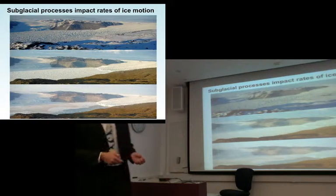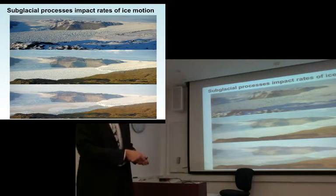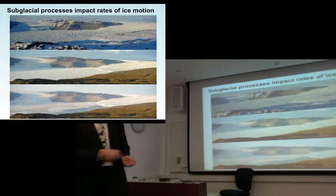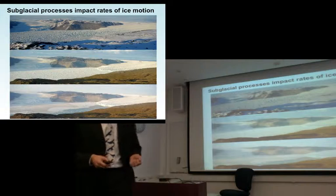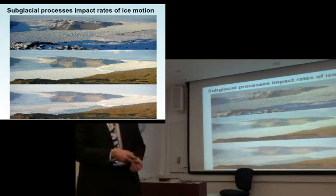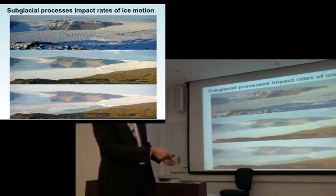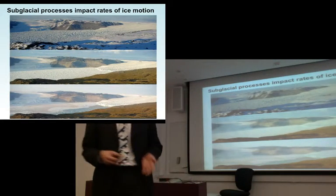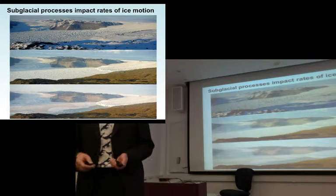This is a tidewater glacier in Greenland at the end of summer, where you can see the calving front very clearly. The processes going on at the ice-bed interface are crucial to controlling how rapidly a glacier flows. If something changes at the ice-bed interface that causes the glacier to speed up, you'll be calving more ice. If you double the rate this glacier is flowing, you'll double its sea level rise contribution from icebergs. The processes at the glacier bed are not the only thing that controls dynamics, but they're an important part.